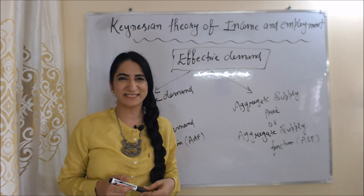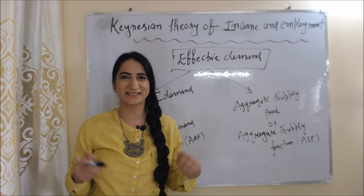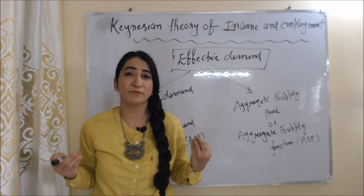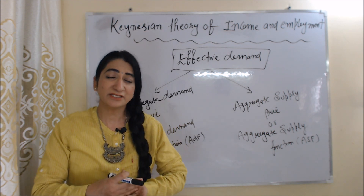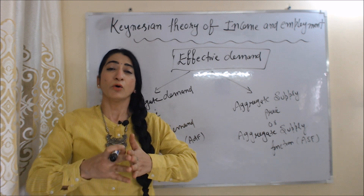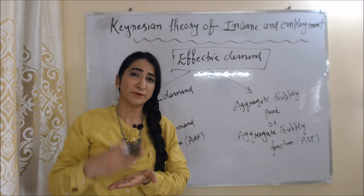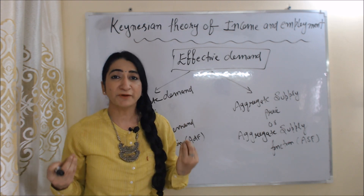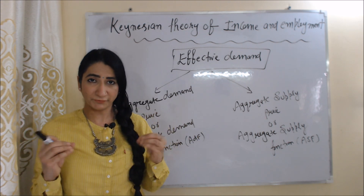Hi everyone, my name is Mini Sethi. I hope you all are staying healthy. Today we are going to talk about Keynesian theory of income and employment. This theory completely depends on effective demand, or we can say that effective demand plays a very important role in this theory, and effective demand is determined by two factors.